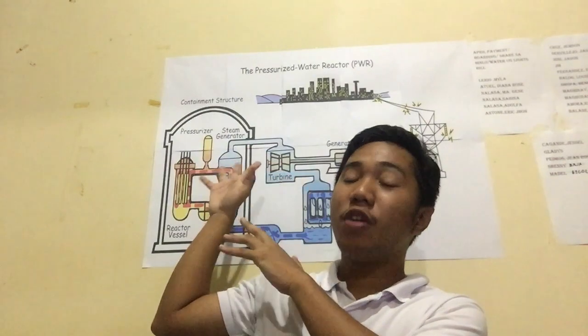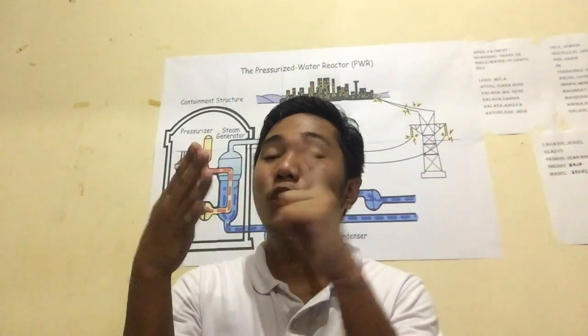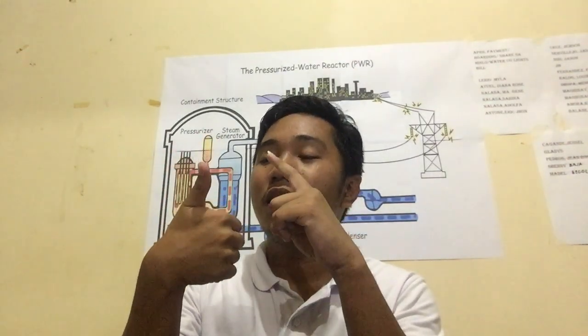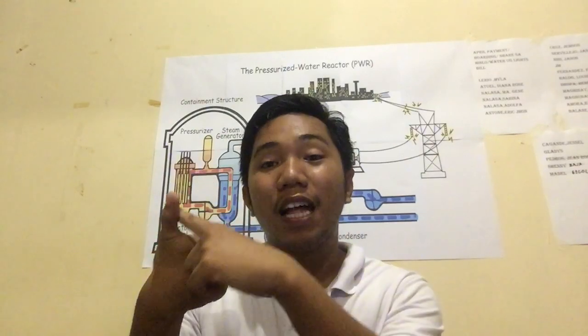Now let's explore the pressurized water reactor and discuss how each part functions in controlling the chain reaction of fission. There are six parts: the fuel rods, control rods, moderator, coolant, reactor vessel, and lastly, the regulator.